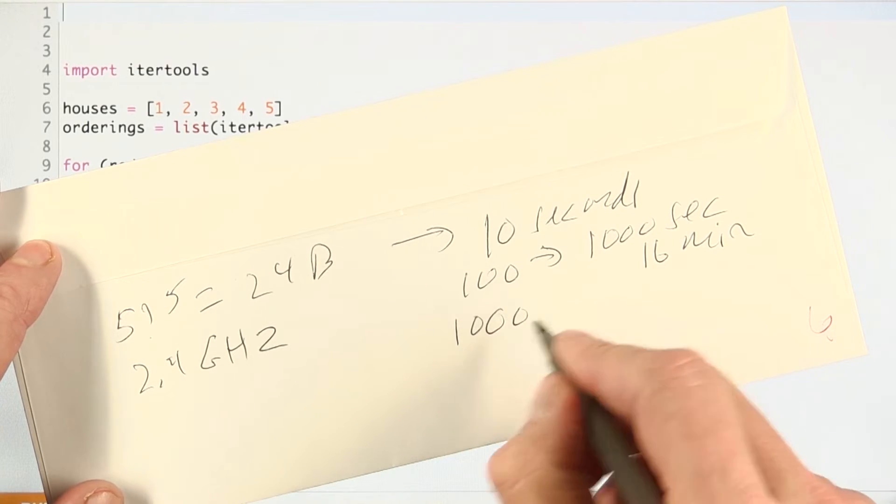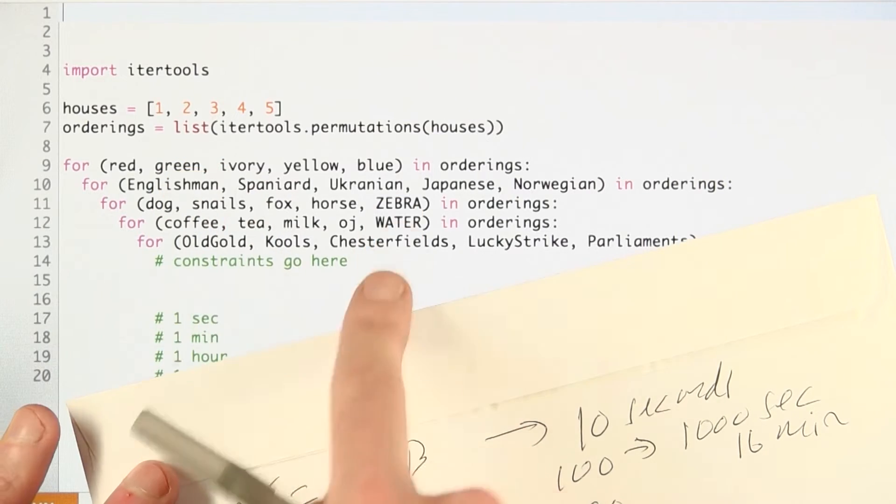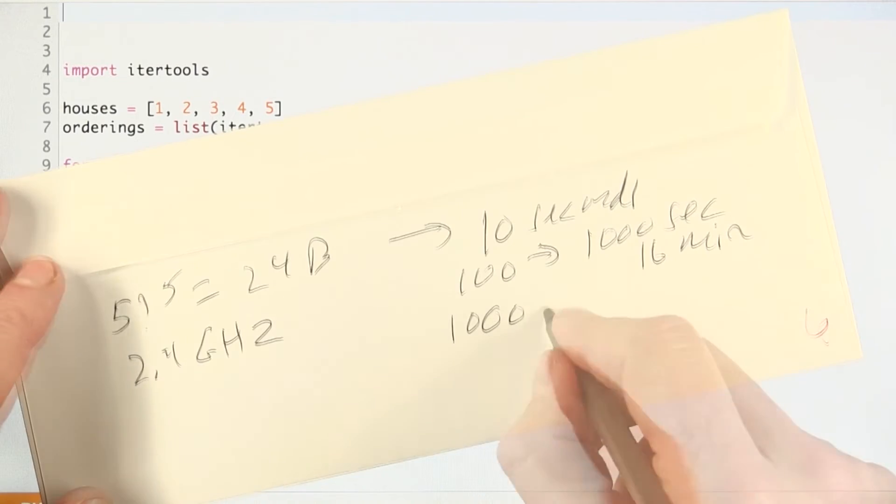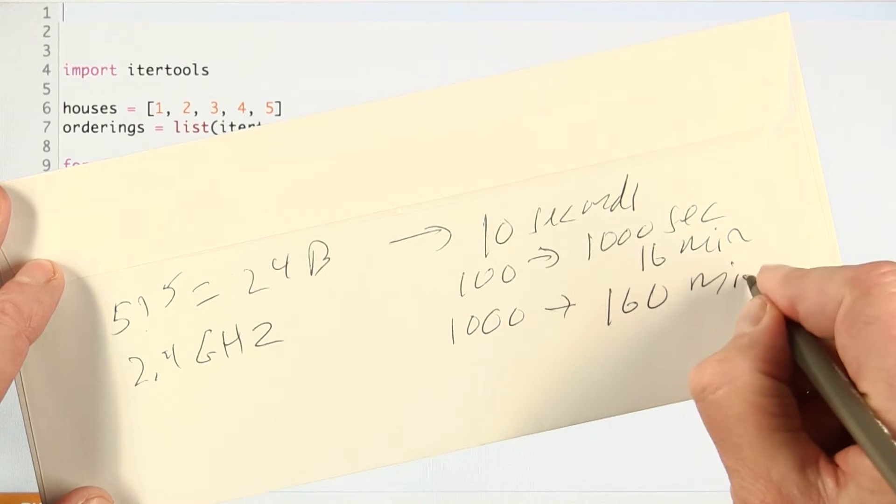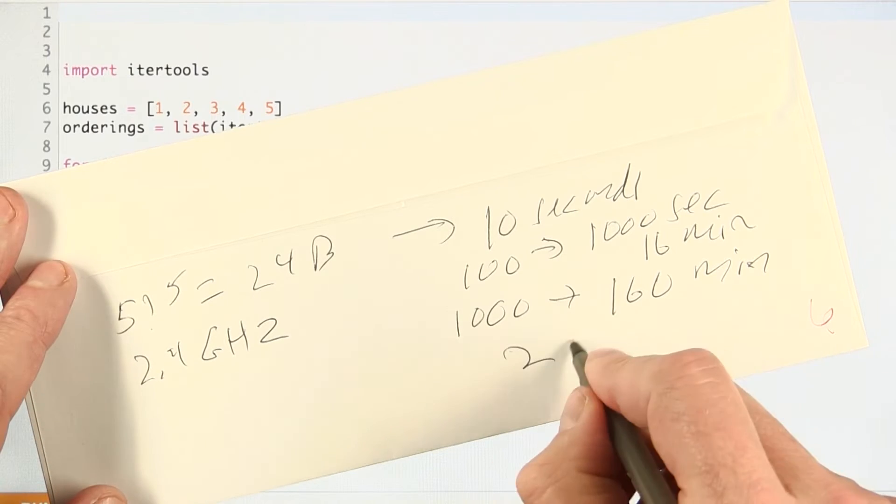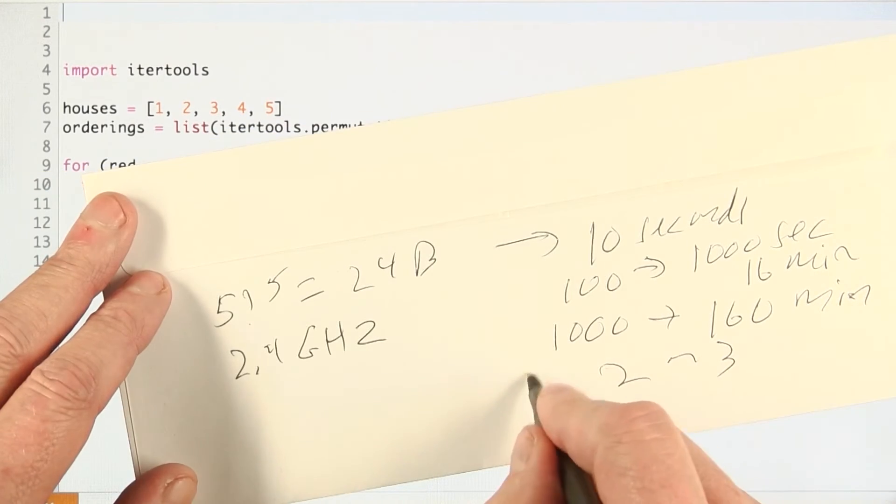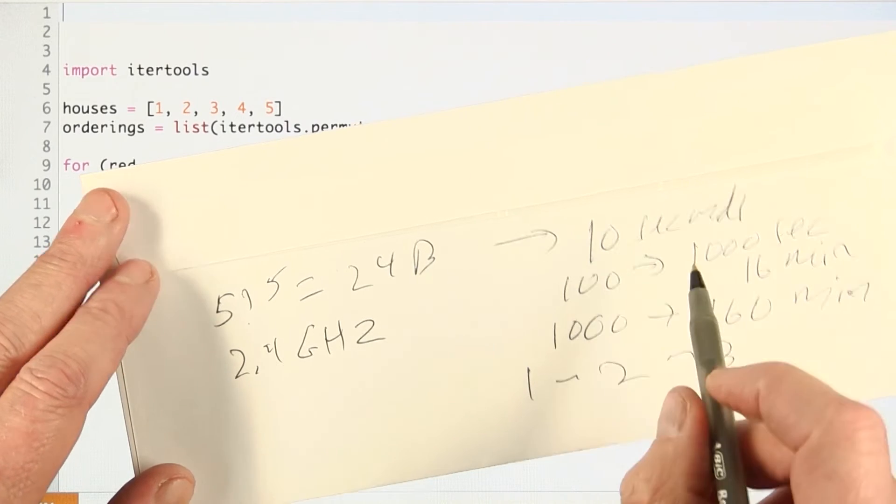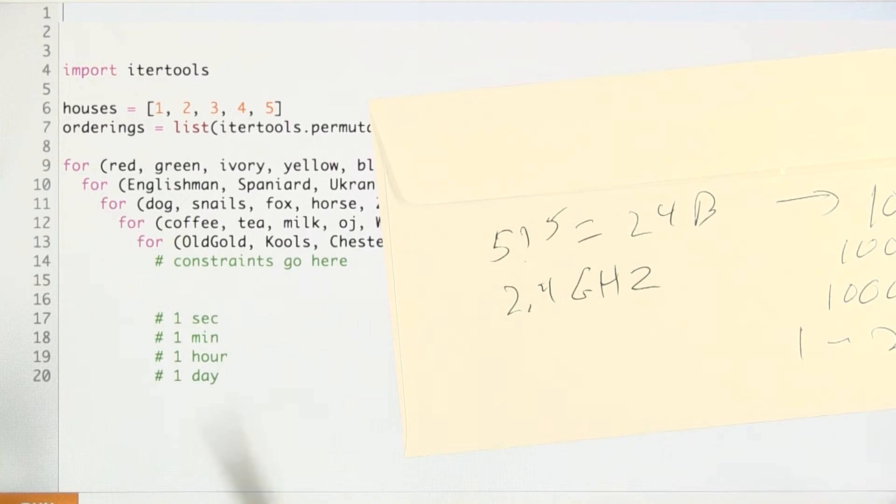It's probably going to be more like 1,000 instructions to make all the way through doing all this and then checking the constraints. That would be about 160 minutes. An hour, two, three hours, maybe we'll say two or three hours somewhere in there. It might be as little as one hour. We can't really tell because it's just an estimate, but it's definitely going to be in the hour range and not in the minutes or day range.